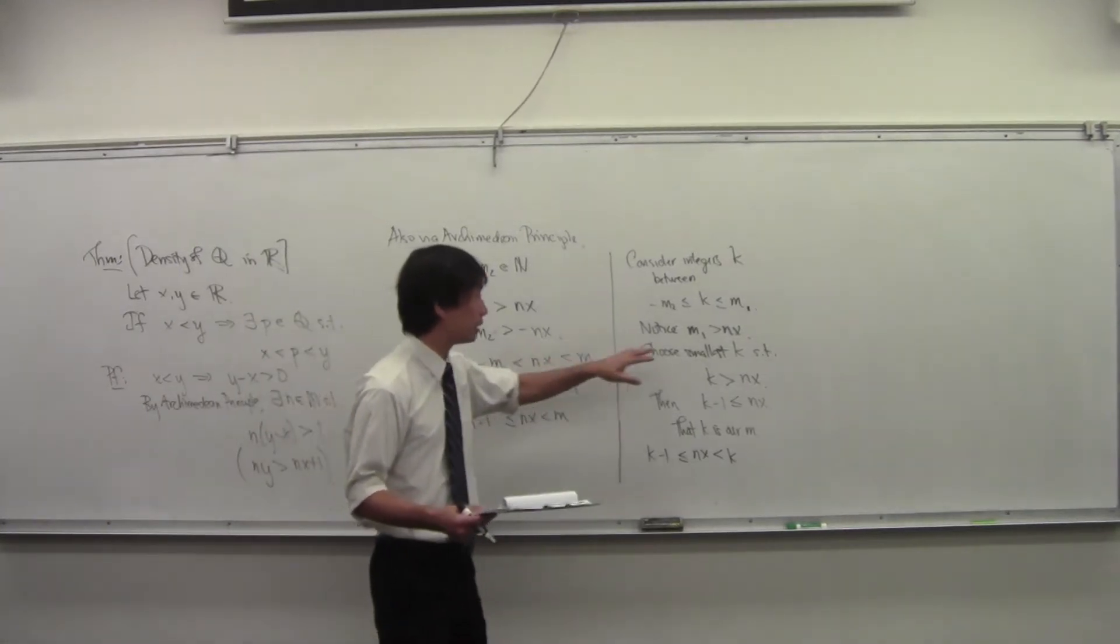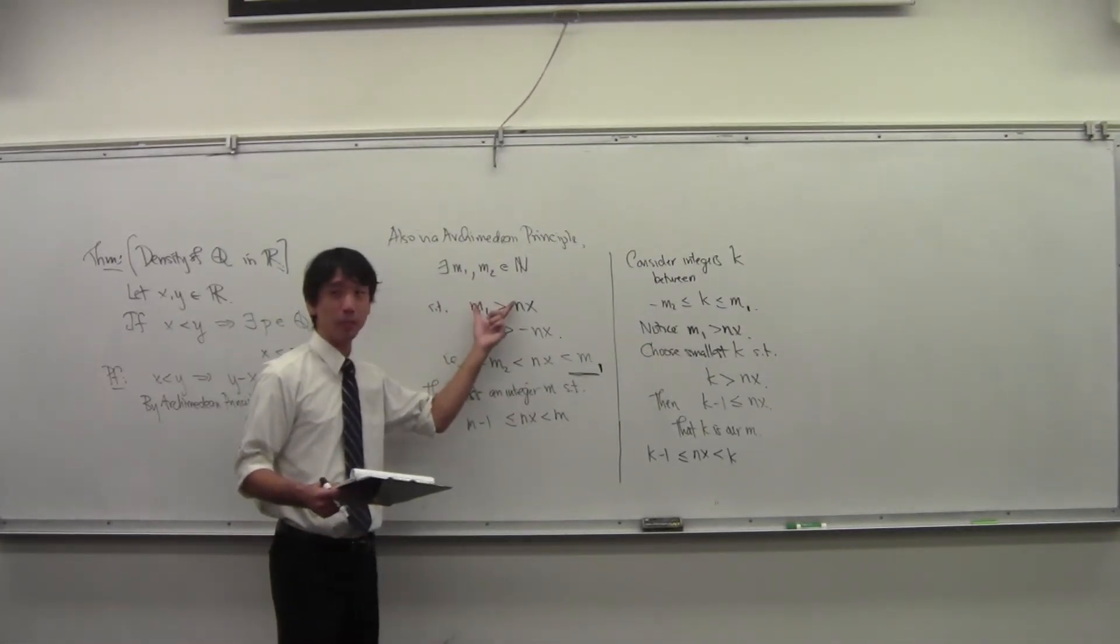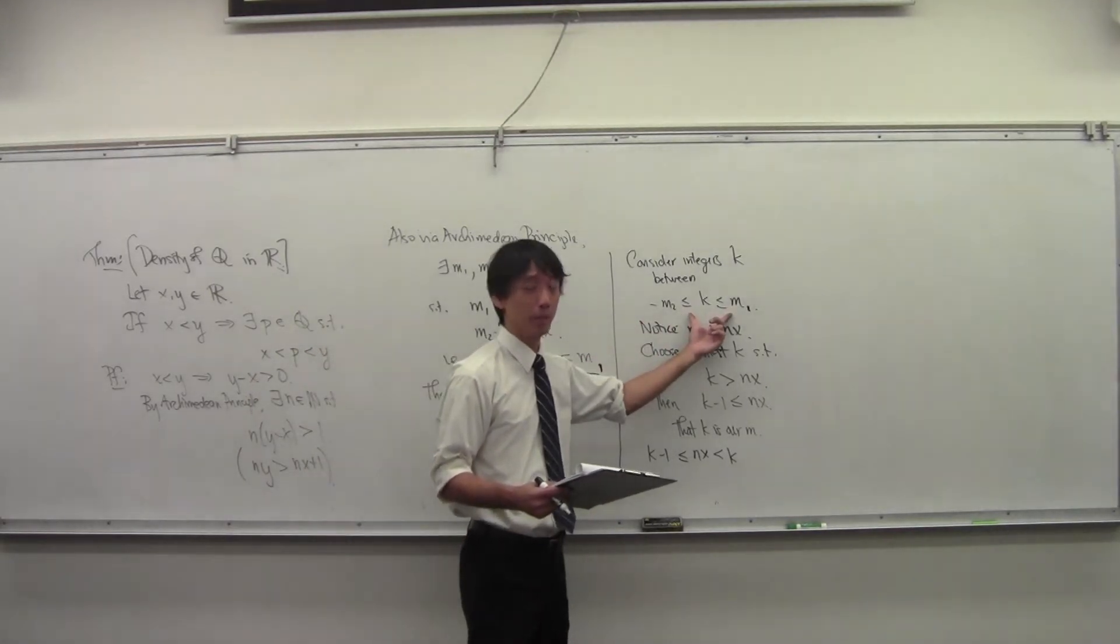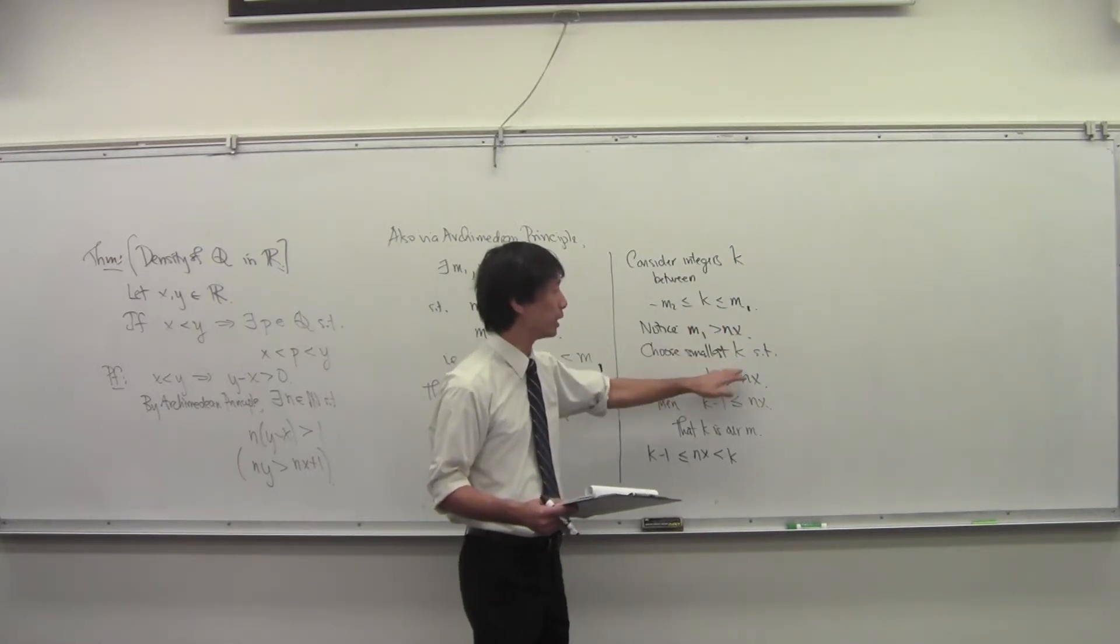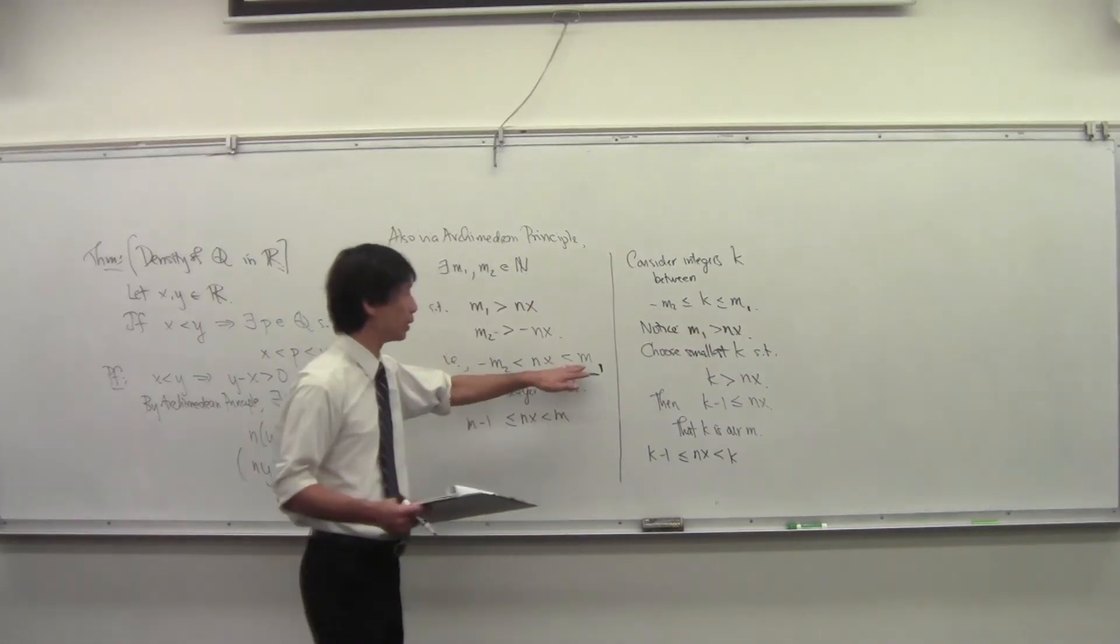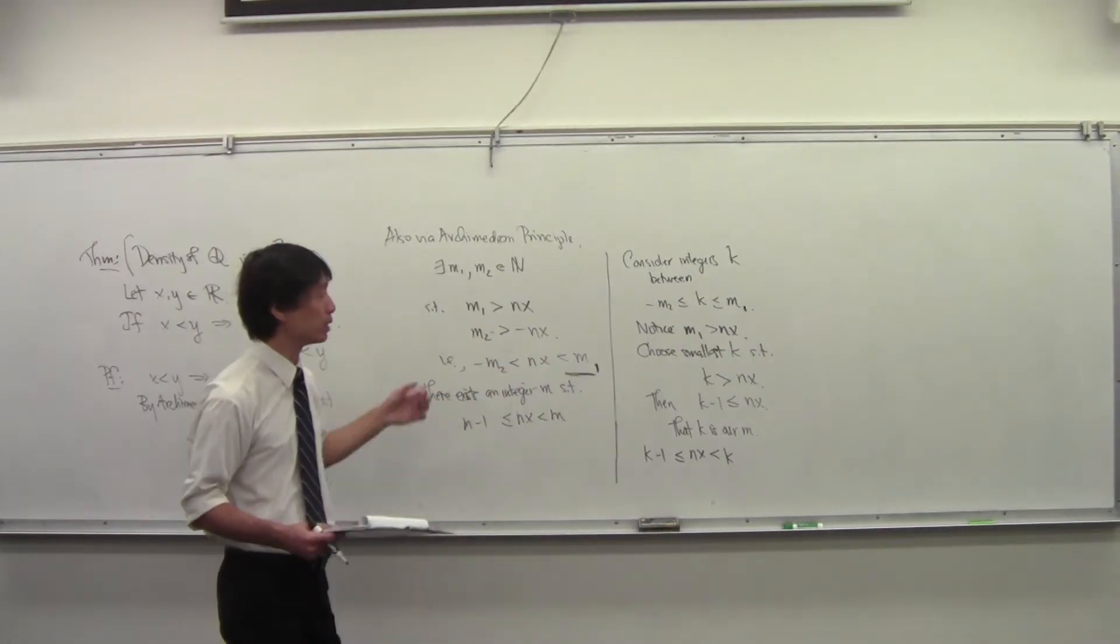But we had to use the Archimedean principle to get this down to a finite problem. We're trapped - there's a finite number of integers here. And we say, okay, now we can choose the smallest guy such that this happens. There's some of these guys that work, and we choose the smallest one that works.